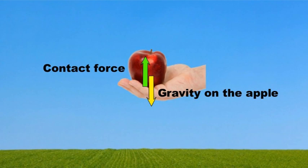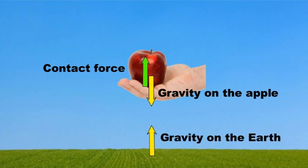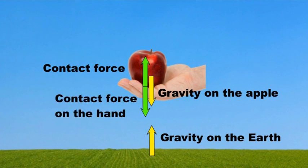So far, so good. We have two forces on the apple — gravity downwards and contact force upwards — and those two forces balance each other. But each force must have a reaction force, an equal and opposite force. So there actually has to be two pairs of forces. The reaction force for gravity pulling downwards on the apple is the apple pulling upwards on the Earth. The reaction force to the upwards contact force from the hand is a downwards contact force on the hand by the apple.